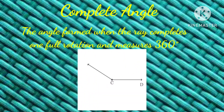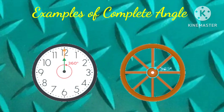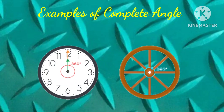A complete angle is formed when a ray completes one full rotation and measures 360 degrees. Here are a few examples of complete angles.